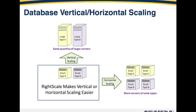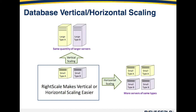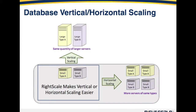We start with a situation where you see a small type A and a small type B server. In the vertical scaling concept, you end up with the same number of servers — still an A and a B — just on a larger instance size. Conversely, with horizontal scaling, you end up with servers of the same size, but you have more of them to help handle the database load.